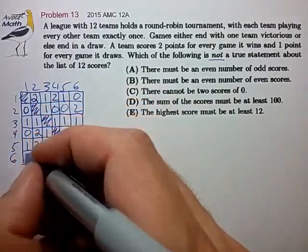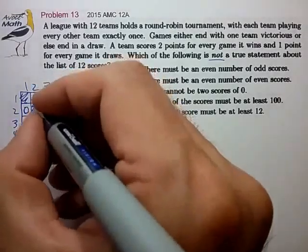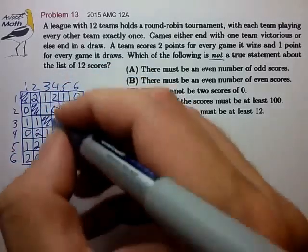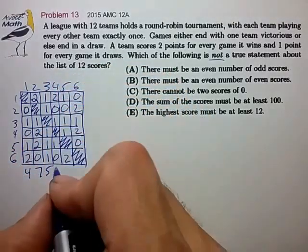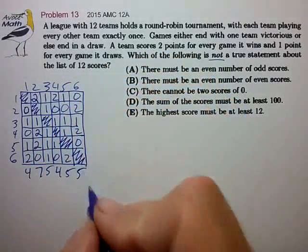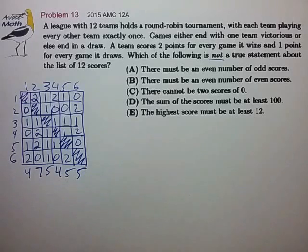So let's add them up. The scores are four, seven, five, four, five, and five. Now let's examine these statements.